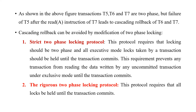The rigorous two-phase locking protocol requires that all locks — both shared and exclusive — be held until the transaction commits. Unlike strict two-phase locking where a data item can be used for read mode by others, in rigorous two-phase locking no transaction can access the same data element in any mode unless and until the holding transaction commits. Whatever data item has been locked by T1 or T2 will not be given to any other transaction for either read or write until the previous transaction commits.